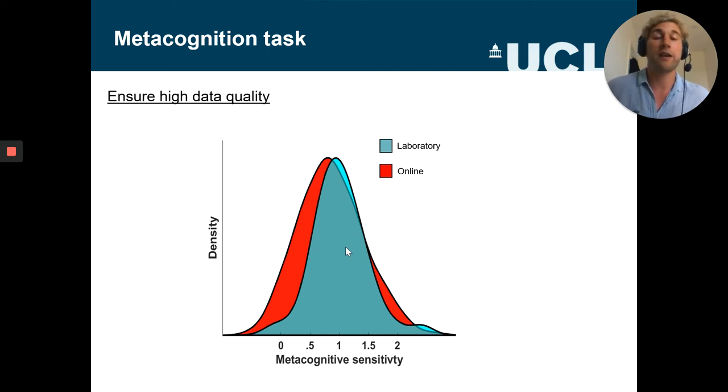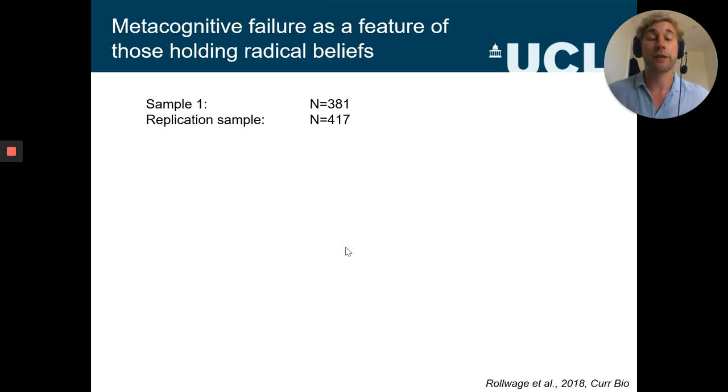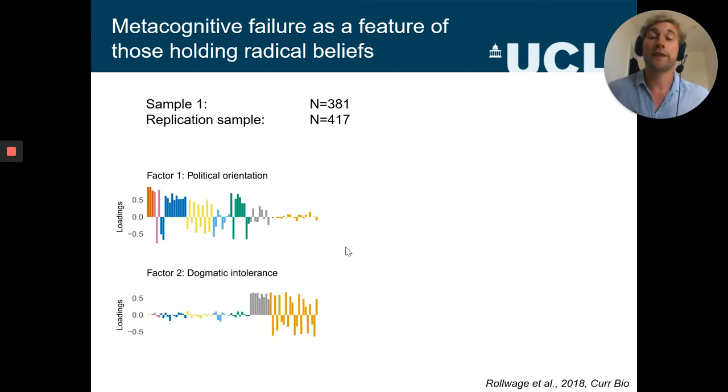So after having assured that we have quality data, we then can go on and answer our empirical questions. And as I said, I was specifically interested in the relation between metacognition and radical political beliefs. So in this study, we acquired data from two large samples and each participant conducted this perceptual metacognition task. And on top of this, answered a bunch of political questionnaires measuring their political orientation and also their general belief rigidity and stuff like intolerance for opposing political beliefs. We then conducted a factor analysis over these items, finding that two factors of interest best describe the interrelation between all these questionnaires.